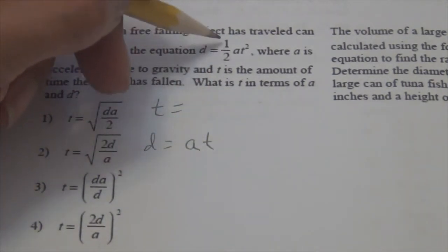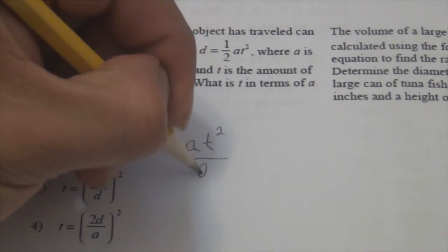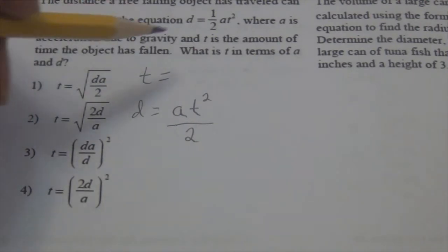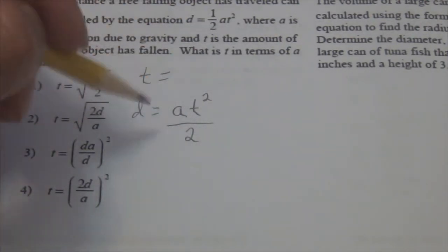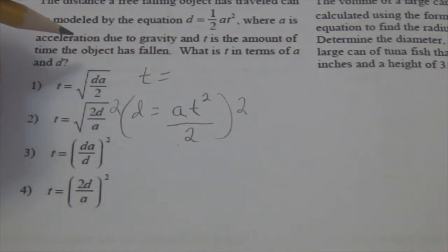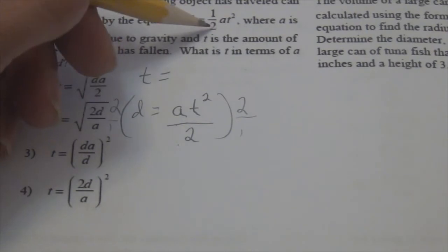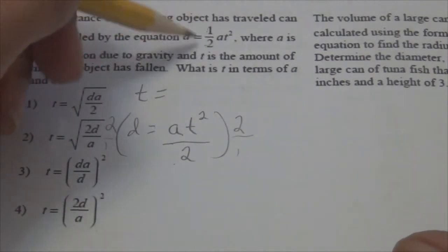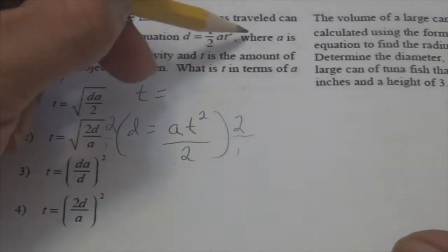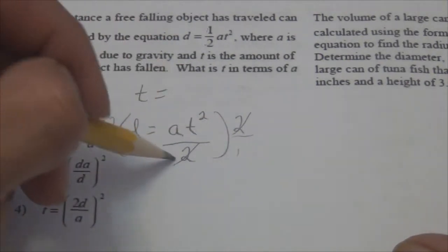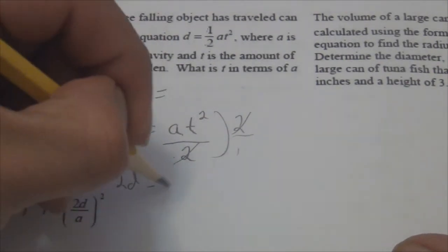Multiplying by one half is the same thing as dividing by two. Fractions? Yes. Common denominator is 2, so multiply by 2. Multiplying by 2 and dividing by 2 cancel each other. I end up with 2D equals AT squared. What to do next? Divide by A. So I write 2D over A equals T squared.